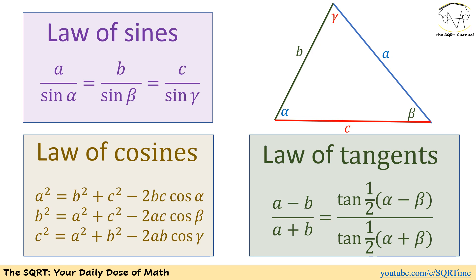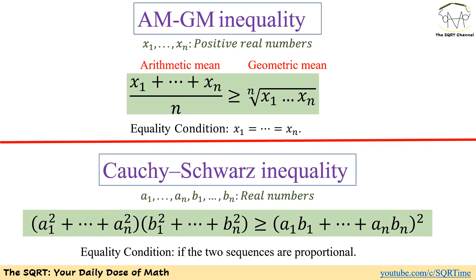Let's also review the AM-GM inequality. For positive real numbers x₁ through xₙ, the arithmetic mean is greater than or equal to the geometric mean: (x₁ + x₂ + … + xₙ)/n ≥ ⁿ√(x₁·x₂·…·xₙ). Equality holds if and only if x₁ = x₂ = … = xₙ.